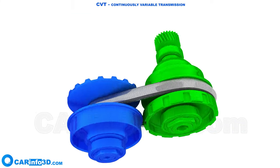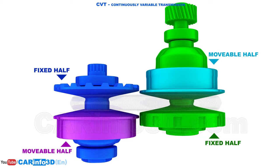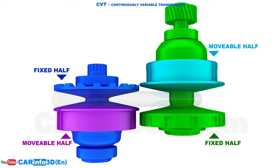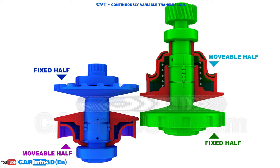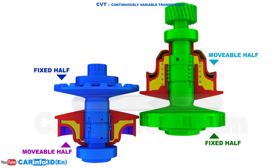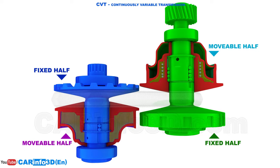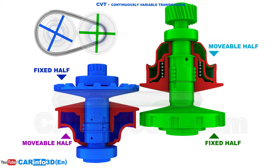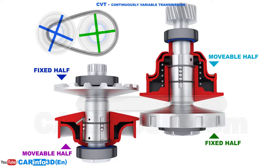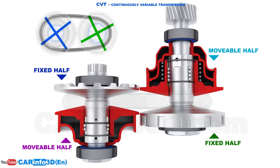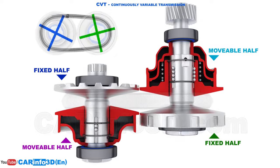Each pulley has two halves — one movable and one fixed — to adjust the gear ratio. The movable halves of the pulleys are propelled by supplying or draining oil from the chambers behind them. When the movable halves change their position, the belt travels toward the inner or outer radius of the pulleys. The gear ratio is determined by the difference in radius between the driven and driving pulleys.